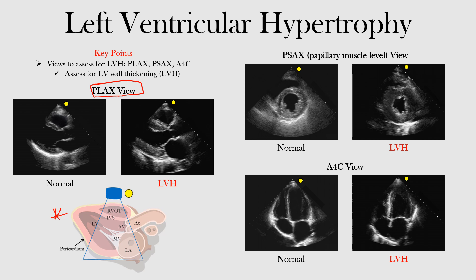In our parasternal long axis view, what we have most anteriorly is the right ventricular outflow tract. Our LV, our left ventricle, is here. What we're looking for in left ventricular hypertrophy is hypertrophy of the ventricular walls. Notice that we have our walls here — this is normal, and this one is going to show left ventricular hypertrophy. Notice the LV here and the wall surrounding it.